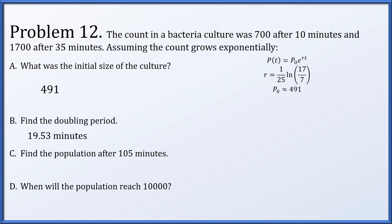Next, find the population after 105 minutes. Since we know the initial population and the value of r, we plug in t equals 105. The population after 105 minutes is 491 times e to the (105 over 25 times log of 17 over 7), which rounds to about 20,396.